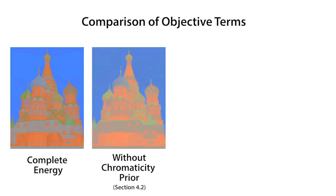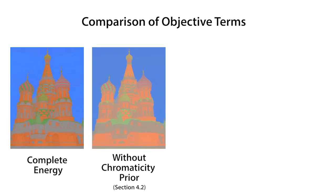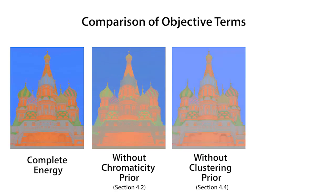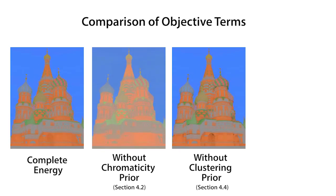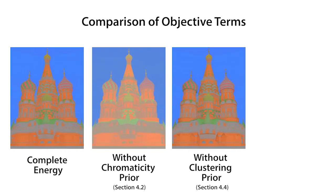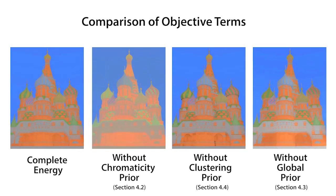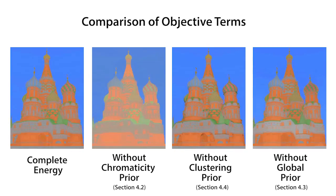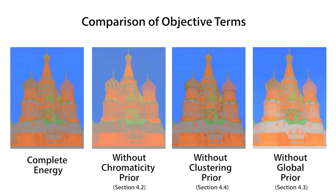Without the chromaticity prior, the colors look faded and temporally incoherent. Without the clustering prior, much shading variation becomes part of the reflectance layer. And without the global prior, the decomposition is not consistent spatially or temporally.